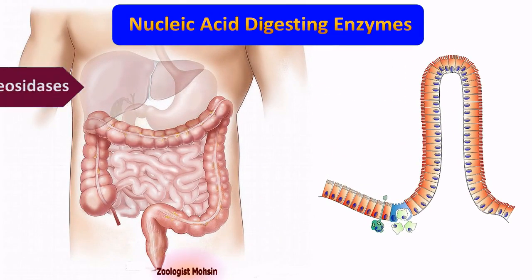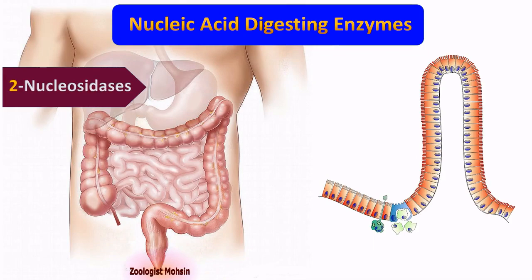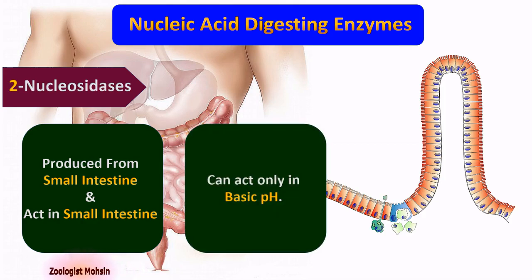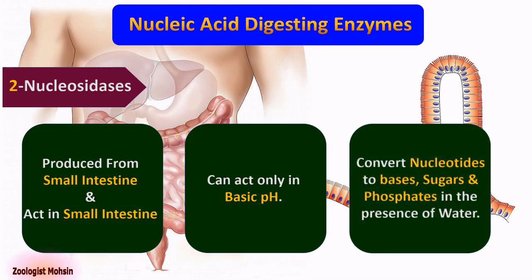Number two: nucleosidases. Nucleosidases are produced from the small intestine and act in the small intestine as well. They can act only in basic pH. Nucleosidases convert nucleotides to bases, sugars, and phosphates in the presence of water, which are the individual components of nucleotides.